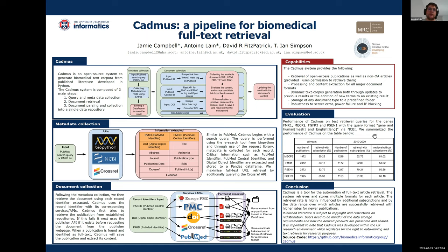What's Cadmus? Cadmus is an open-source system developed in Python. The aim of Cadmus is to generate agnostic biomedical full-text corpora. The system is composed of three main steps: the first one, query and metadata collection; the second one, document retrieval; and finally, the third one, document parsing and collection into a single file.